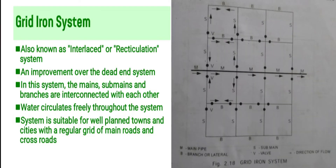The second layout is the grid-iron system. It is also known as the interlaced or reticulation system. It is one improvement over the dead end system.